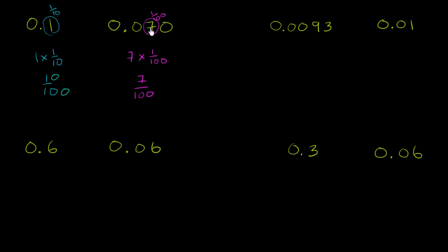Another way you could think about this: if you were to increment by hundredths, you would start at 7 hundredths, 8 hundredths, 9 hundredths, and then you would get to 10 hundredths — so you would get to that number. So this number, multiple ways you could think about it, is definitely larger. This is greater than that. The greater than symbol opens to the larger value.